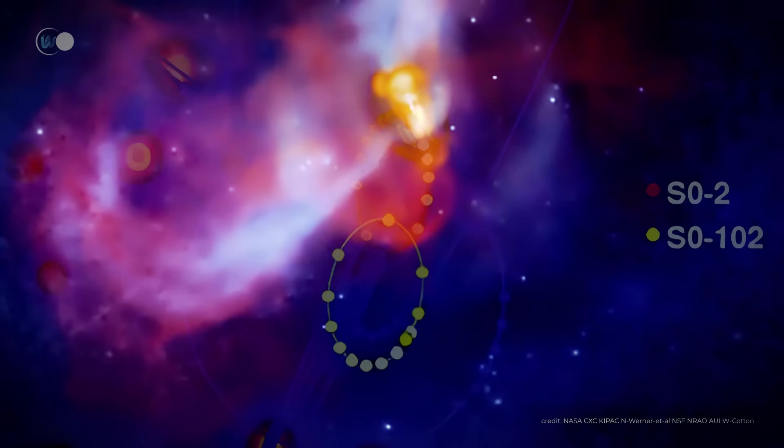The galaxy 3C 297 is now catalogued as a fossil group. This is a galactic system in which some or all of the component galaxies have merged to form a single galaxy. 3C 297 is even the most distant fossil group of galaxies ever identified. It will thus continue its solitary life for several billion years.